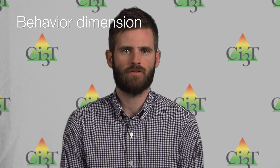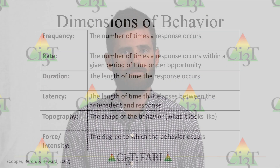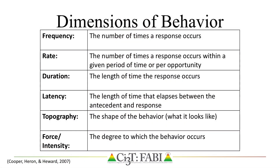Behavior has several different dimensions. It is necessary to first identify the behavioral dimension that is of interest before you can select an appropriate measurement system. Behavior has at least six dimensions. These are frequency, rate, duration, latency, topography, locus, and force.